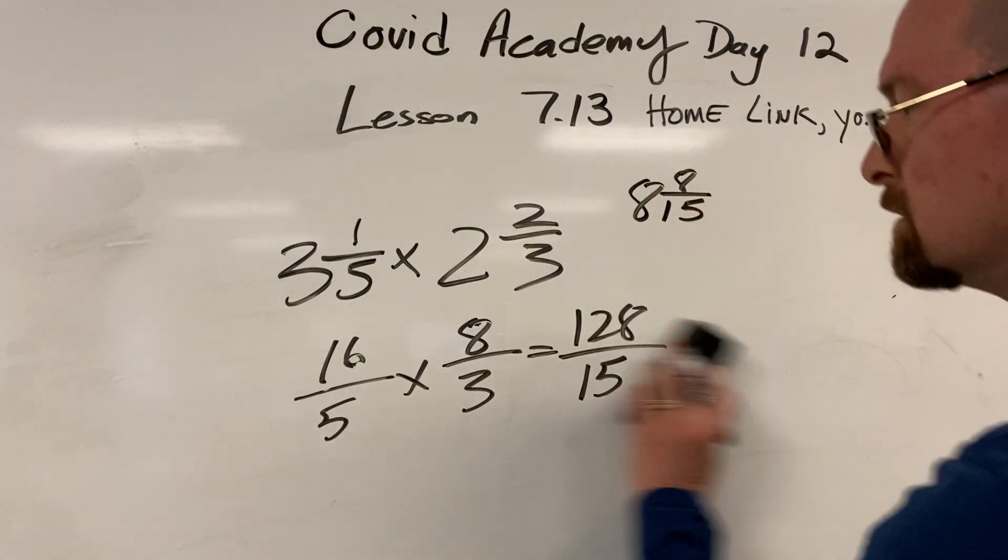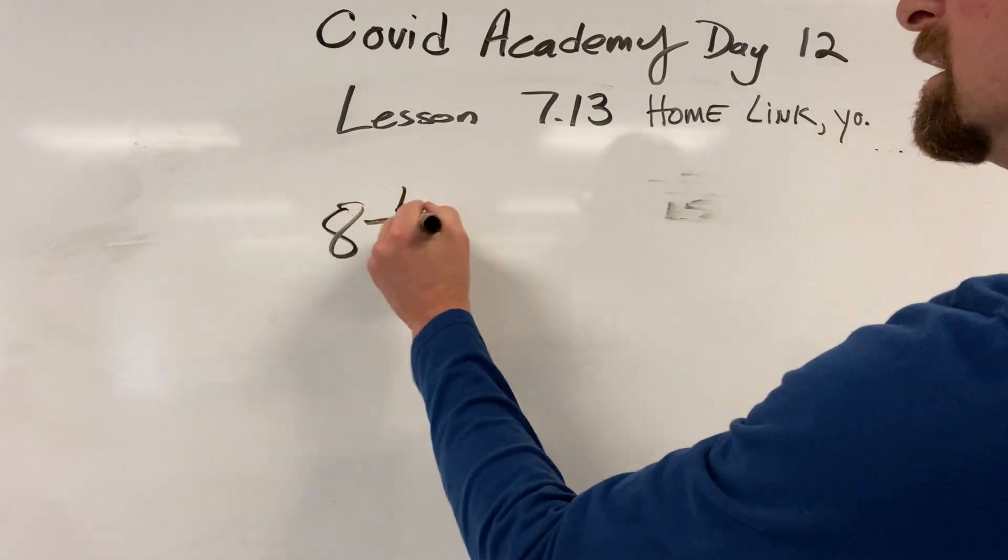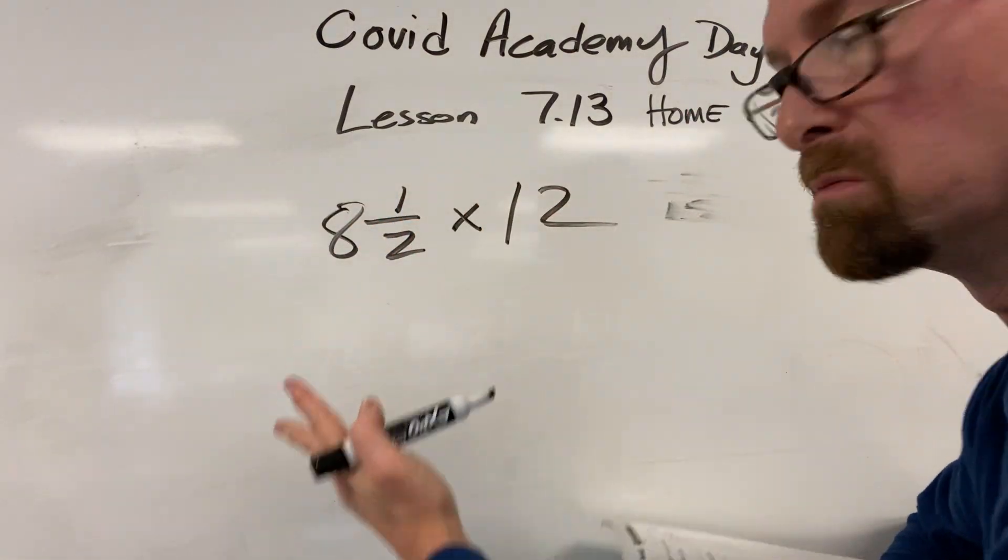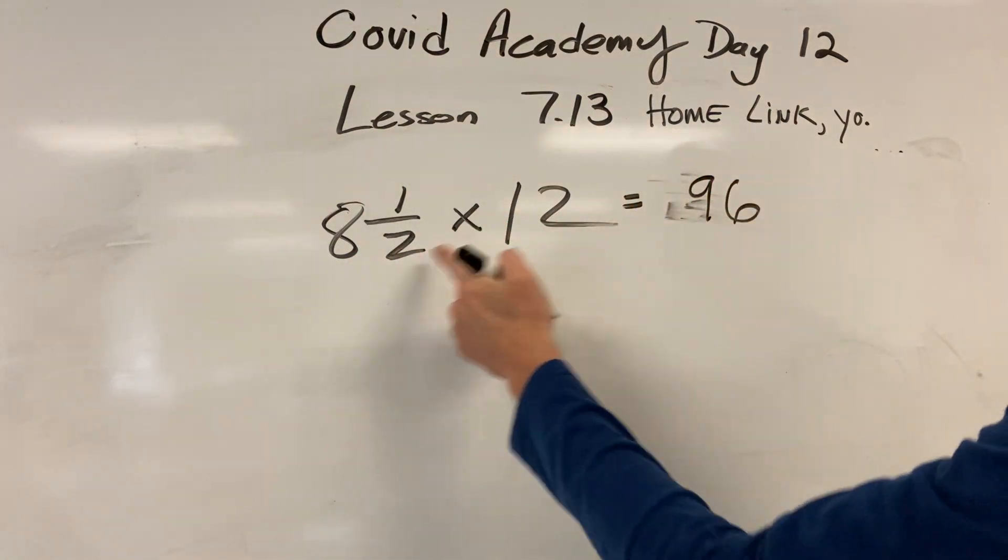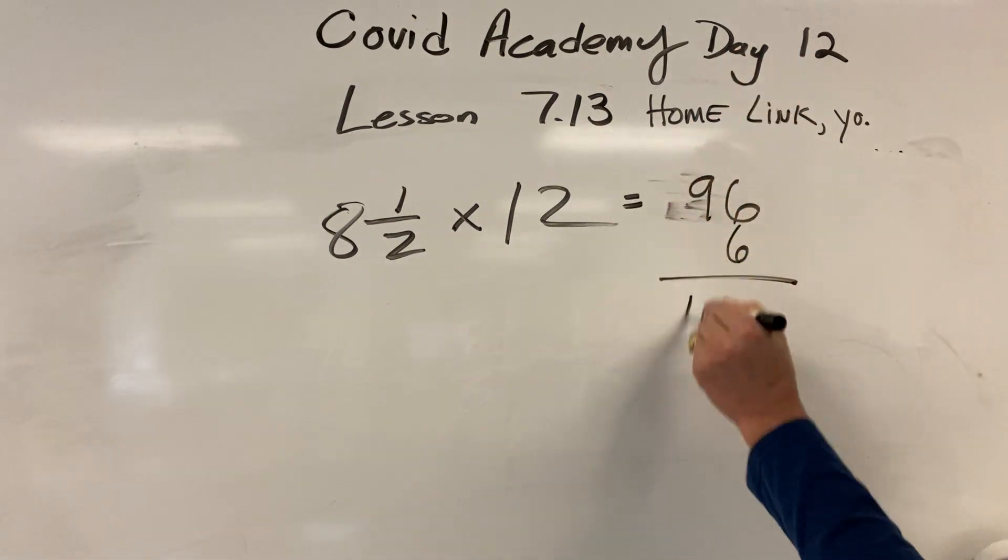Okay. Next. Number 7: 8 and 1 half times 12. This is a very reasonable problem. 8 times 12—that's 96. A half times 12—that's a half of 12, that is 6. We put them together, we get 102.